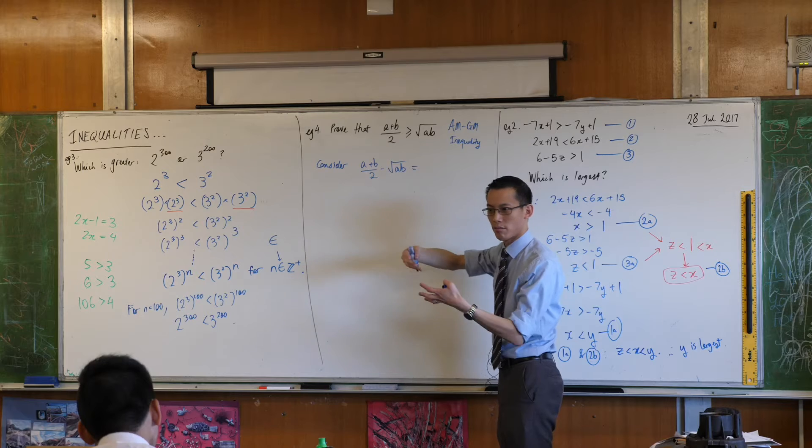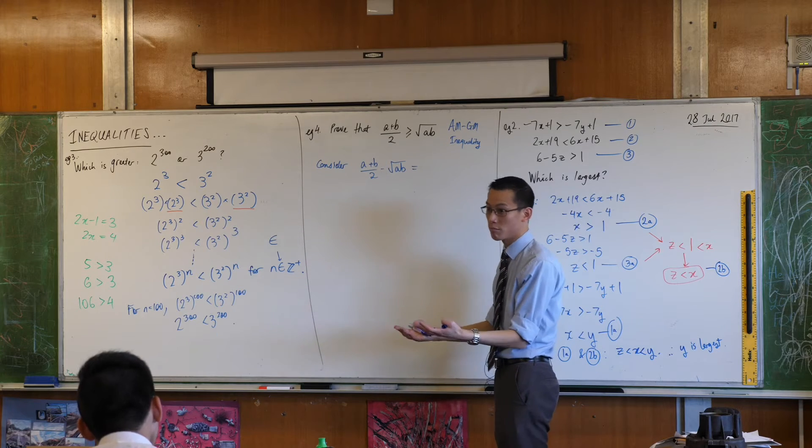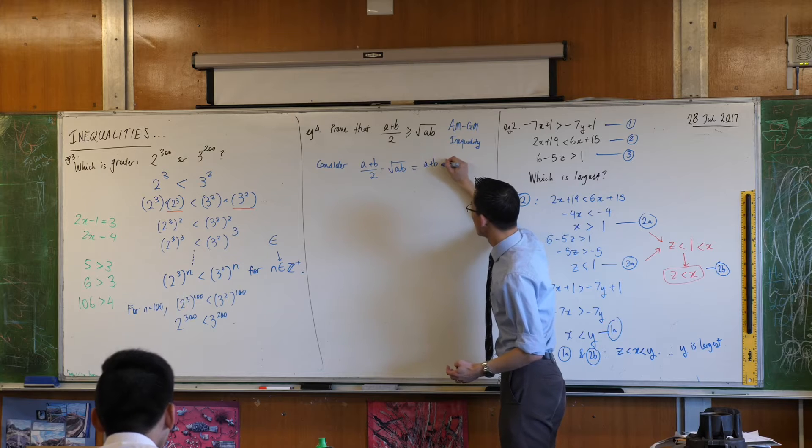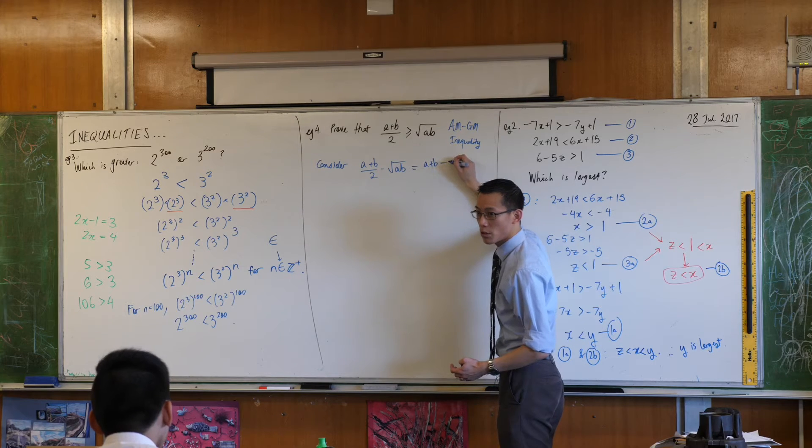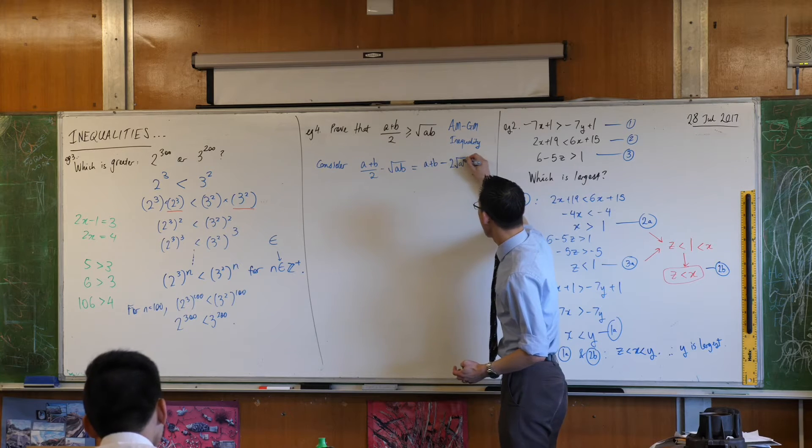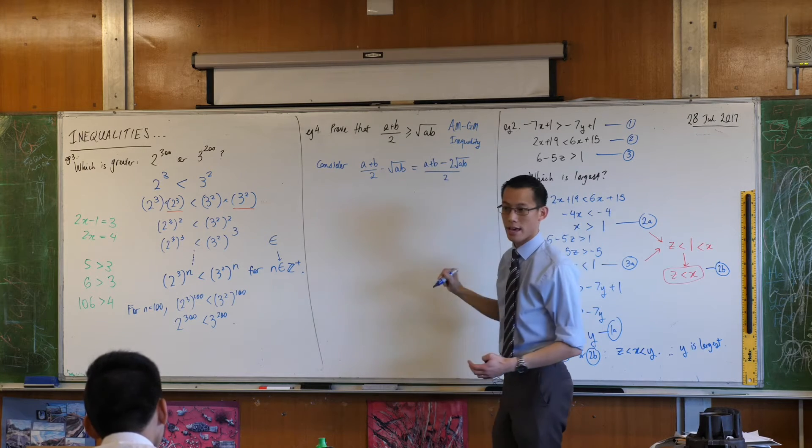You just combine them, right? And then you just got one fraction. One fraction is better than two fractions. So that's going to be a plus b, take away what when you get on that common denominator? 2√ab. Like that.